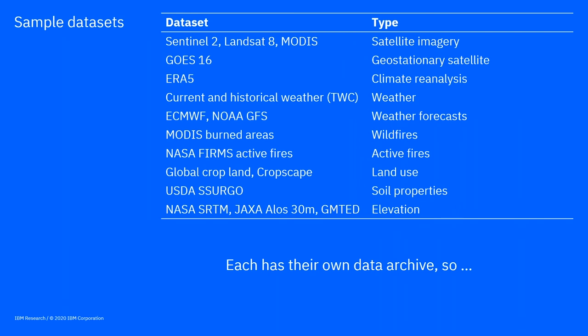PAIRS contains many kinds of data: satellite images of various types, climate and weather, weather forecasts, wildfire data or data on active fires, land use, CropScape — the types of crops planted, which is usually a government-provided dataset — soil properties, and elevation. Some of these change very rapidly — hourly, or every 10 minutes for some. Some doesn't change much at all, like elevation or soil properties.